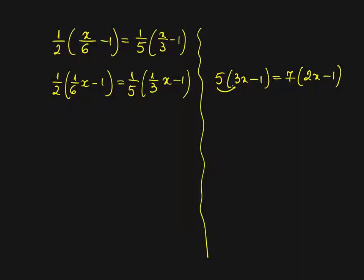I would open the brackets. 5 times 3, 15x, 5 times minus 1, minus 5 equals 7 times 2x, 14x, multiplying over the bracket, 7 times minus 1, minus 7. Here I do the same thing.